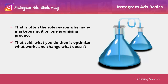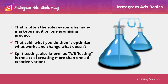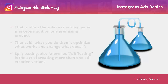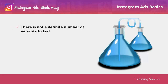What you do then is optimize what works and change what doesn't. The best way to do that is by split testing, also known as A/B testing — the act of creating more than one ad creative variant so you can see what works and what does not. You can then take everything that works from each variant and combine them into one ideal ad. Test to different criteria with a different number of ad variants depending on what you offer.